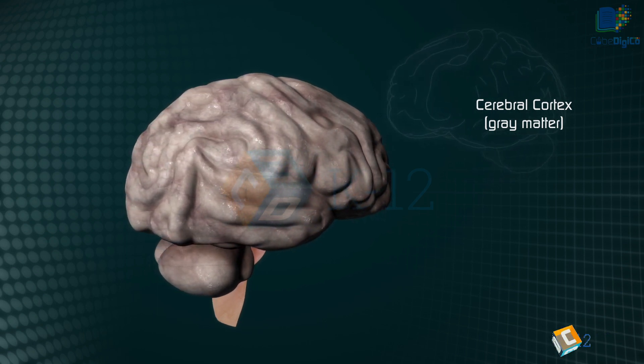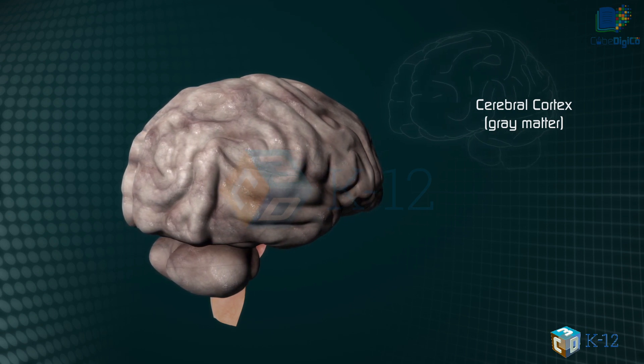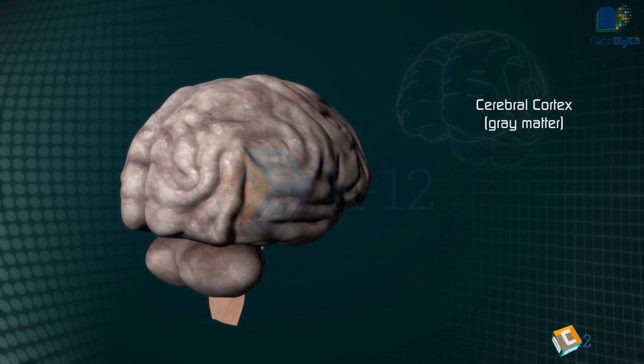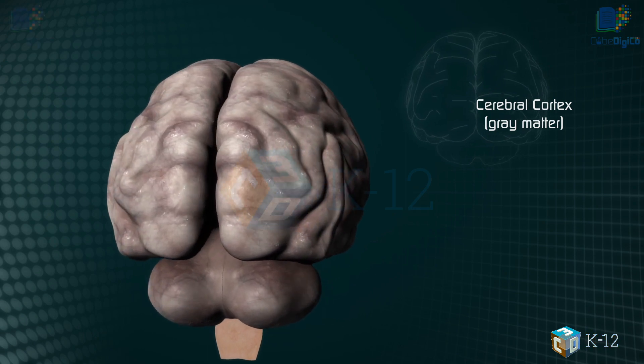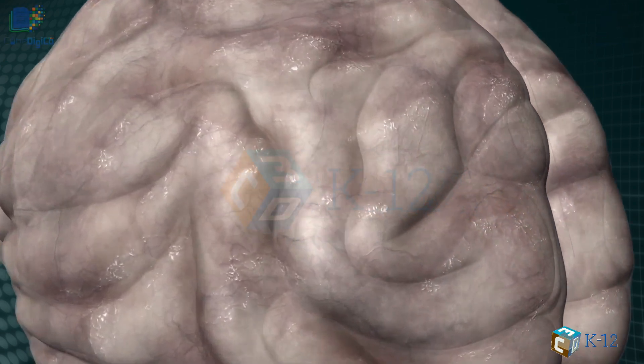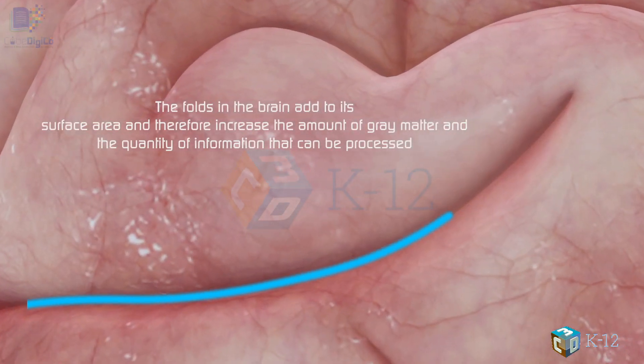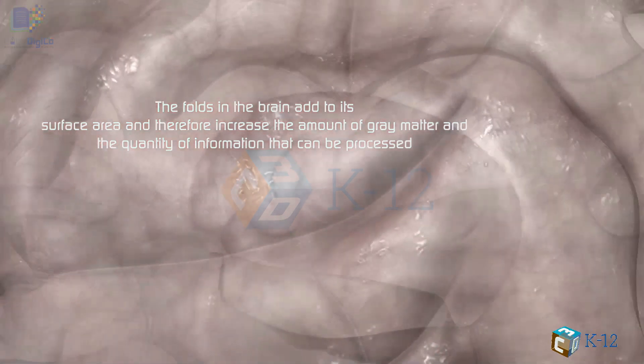The cortex is gray because nerves in this area lack the insulation that makes most other parts of the brain appear to be white. The folds in the brain add to its surface area and therefore increase the amount of gray matter and the quantity of information that can be processed.